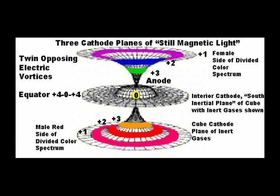Twin opposing electric vortices are projected from the inert gas planes of cold cathode magnetic stillness of the cube wavefields of space into their opposite sexual mates, where they meet, creating spheres of intense heat with an equatorial plane of expansion and maximum radiation.